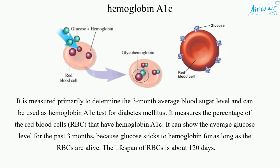It is measured primarily to determine the three-month average blood sugar level and can be used as a hemoglobin A1c test for diabetes mellitus. It measures the percentage of red blood cells (RBC) that have hemoglobin A1c. It can show the average glucose level for the past three months, because glucose sticks to hemoglobin for as long as the RBCs are alive. The lifespan of RBCs is about 120 days.